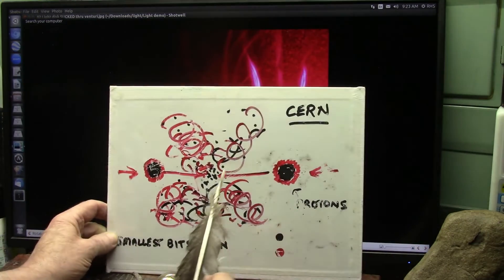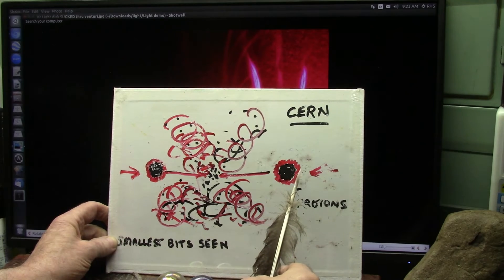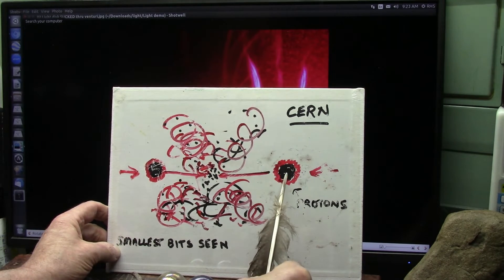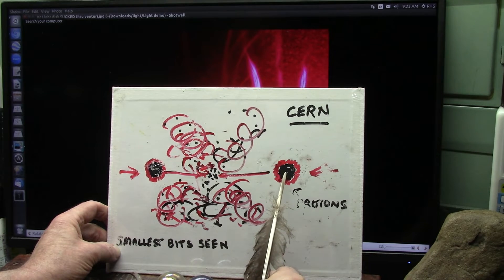Now, here's what CERN does and Fermilab. They take these huge particles. They smash them together. And again, all the white stuff is on the outside. The black is on the inside. They never saw the black ever. They never even knew it was there.